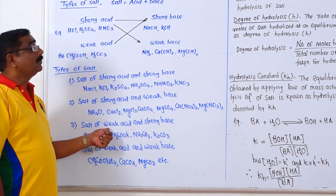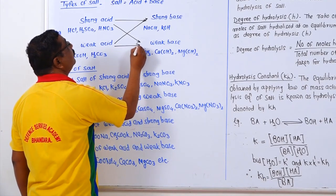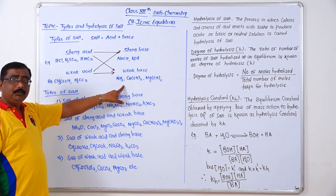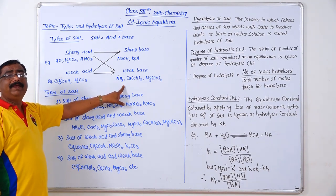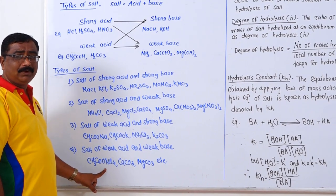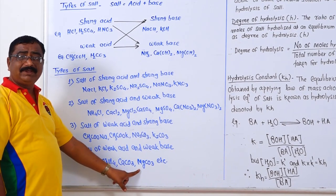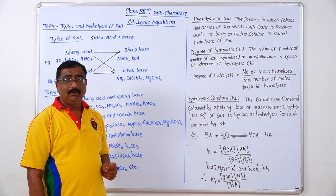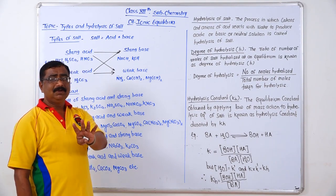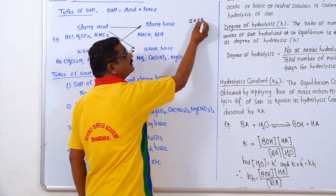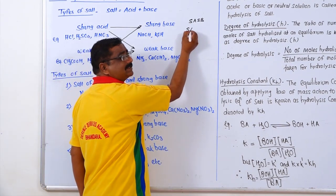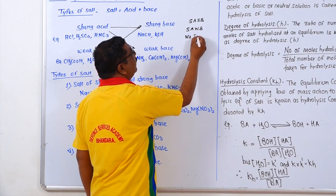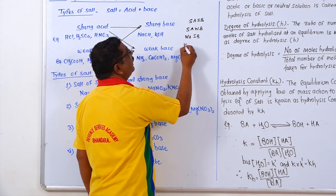The last combination is weak acid and weak base, giving a salt of weak acid and weak base. In all these combinations, water is produced as a byproduct and the remaining compound is the salt. Examples of salts of weak acid and weak base include CH₃COONH₄, CaCO₃, and MgCO₃. So we can say there are four types of salts: salt of strong acid and strong base, salt of strong acid and weak base, salt of weak acid and strong base, and salt of weak acid and weak base.